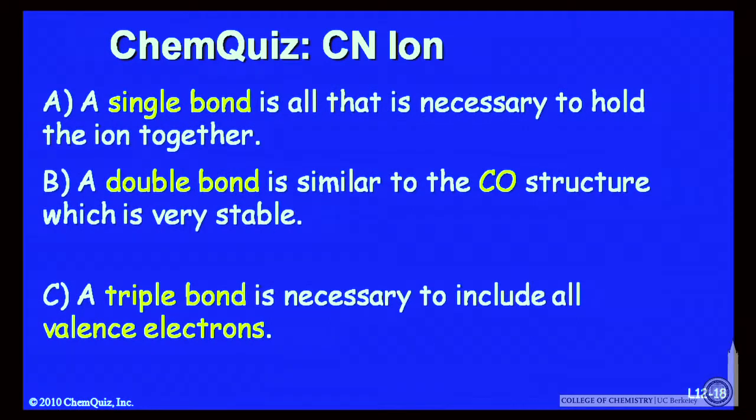Let's look at possible explanations for all the answers. A, a single bond is all that's necessary to hold the ion together. B, a double bond is similar to the CO structure, which is very stable. Or C, a triple bond is necessary to include all the valence electrons. Think about those three possible explanations and make another selection.